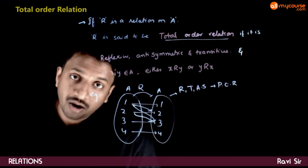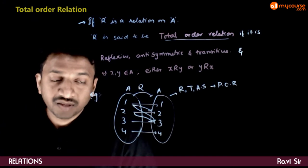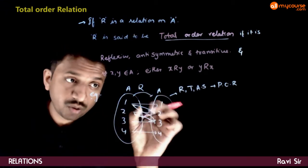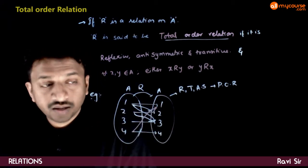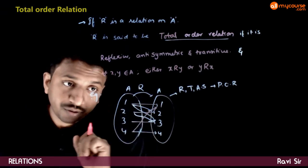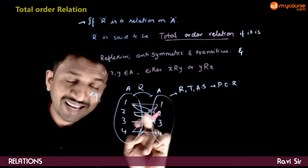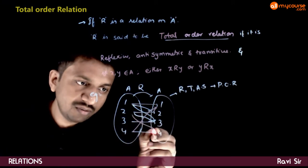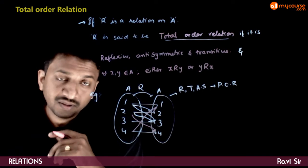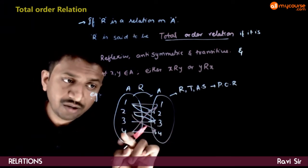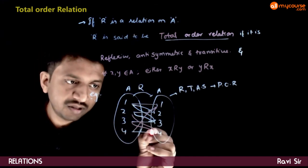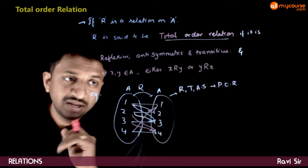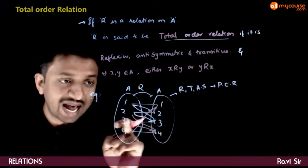To make this a total order relation, we need to add extra connections. Let us take 4 is related to 1. Now we have elements corresponding to (1,2), (1,3), and (1,4). For the pair 2 and 4, neither 2 is related to 4 nor 4 is related to 2, so out of (2,4) and (4,2) we should have at least one. Let us take 2 is related to 4. Next, for 3 and 4, neither is related to the other, so let us take 3 is related to 4. But now there is some problem with the transitivity condition — we need to take care of that.